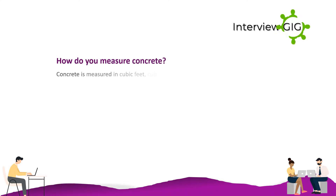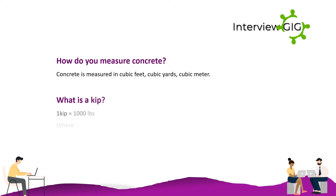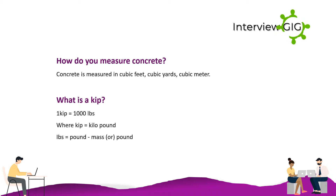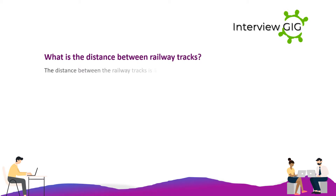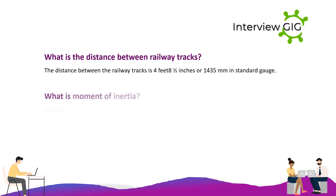How do you measure concrete? Concrete is measured in cubic feet, cubic yards, or cubic meters. What is a kip? One kip equals 1,000 pounds, where kip equals kilo-pound and lbs equals pound mass or pound. What is the distance between railway tracks? The distance between railway tracks is 4 feet 8.5 inches or 1,435 mm in standard gauge.